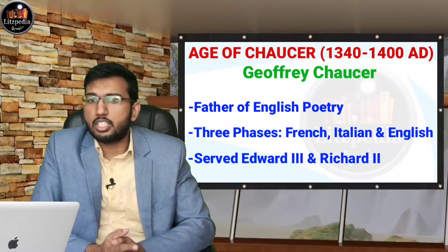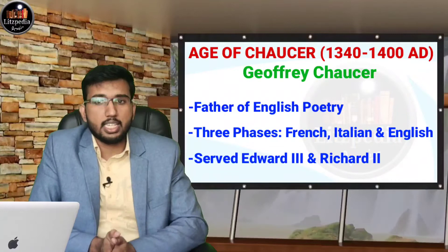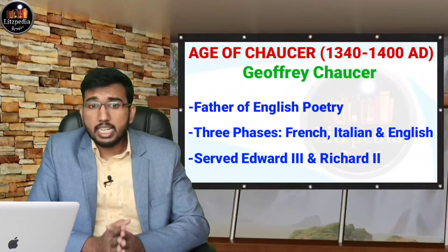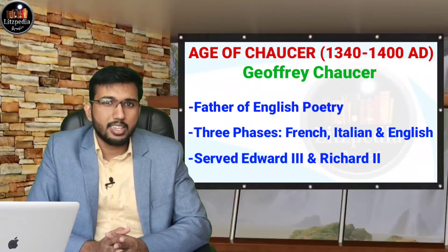In 1386, during the reign of Richard II, Chaucer was elected member of parliament for Kent, and he also served as a justice of peace. He died in 1400, though the exact cause of his death is not certain. He was buried in Poets' Corner in Westminster Abbey, and was the first poet to be buried there.